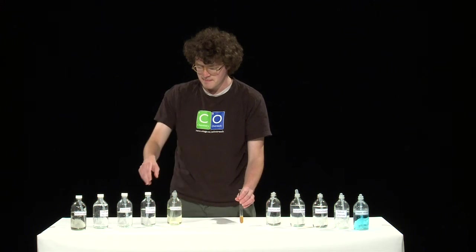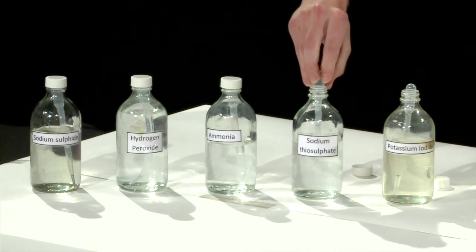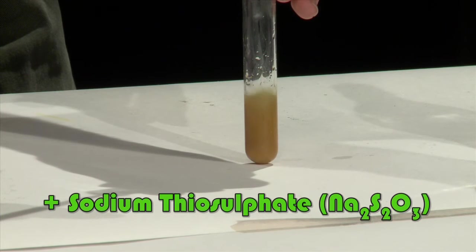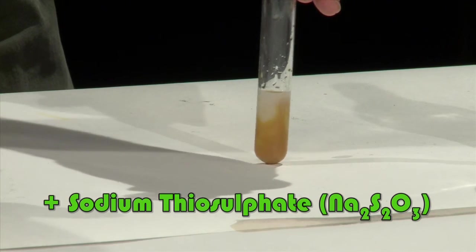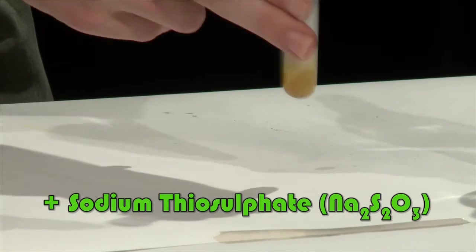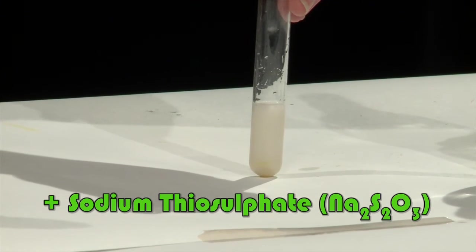Now add 5 drops of sodium thiosulfate. The thiosulfate reduces the iodine to a clear solution of iodide. The white color is due to the copper iodide precipitate, which is unaffected by this reaction.